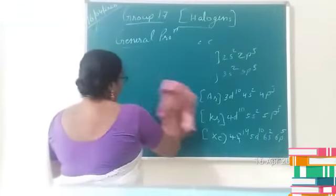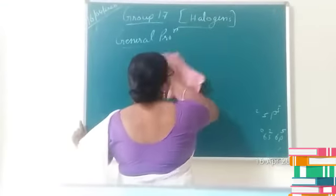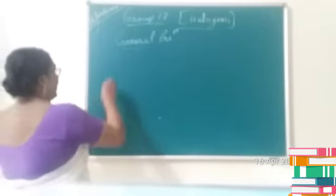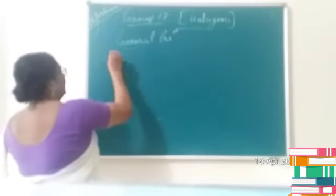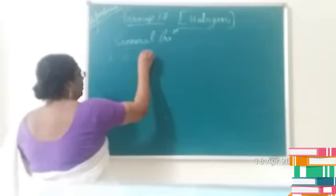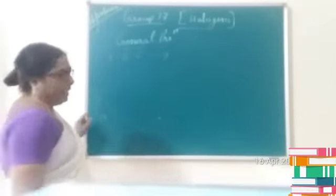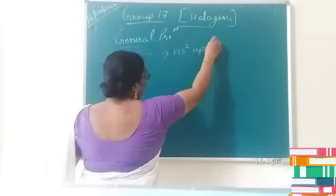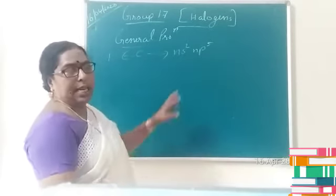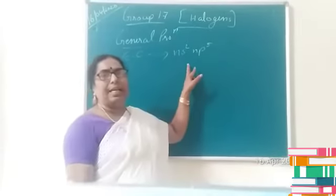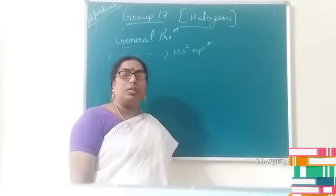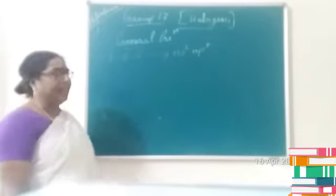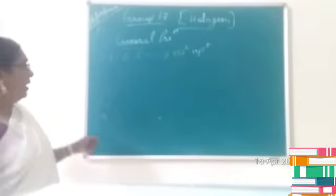The general electronic configuration of Group 17 is ns2 np5. All elements of Group 17 possess a completely filled s orbital and five electrons in the p orbital, giving the general electronic configuration of ns2 np5.